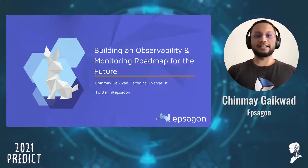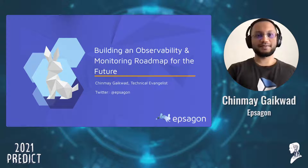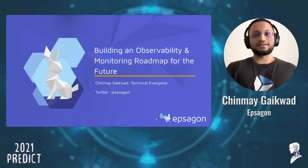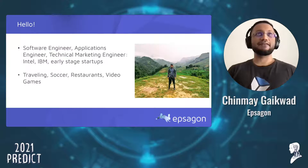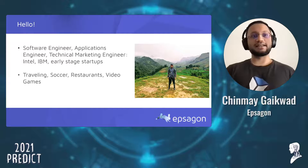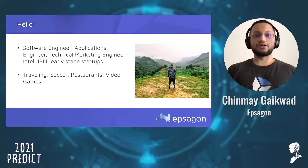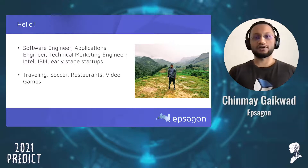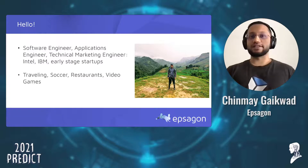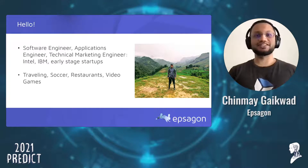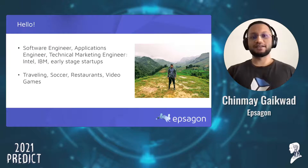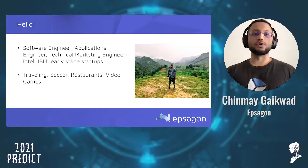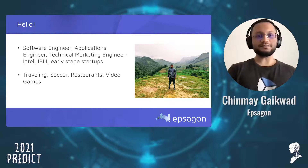A few housekeeping items — please stick around till the end, there is a special offer for you. A bit about myself: I've had a very interesting journey, right from working at large-scale companies such as Intel and IBM, to working at smaller startups as well, one of which is Epsagon. My hobbies include traveling, soccer, exploring restaurants, and playing video games. These days it's just restricted to video games, and I'm really looking forward to resuming traveling as soon as the COVID situation is over.